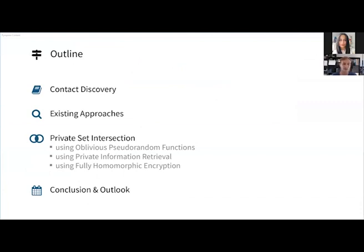For private set intersection I'd like to show in more detail the high-level different variants using oblivious pseudorandom functions, how we can combine that with private information retrieval, and also private set intersection using fully homomorphic encryption. At the end, a short outlook on what needs to improve further for these technologies to be practical.